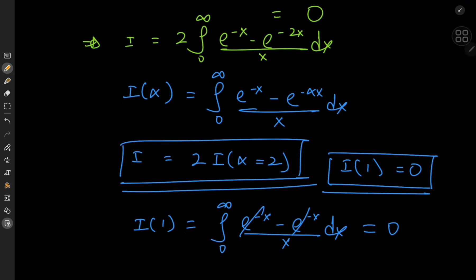Now that we have the perfect plan in place, we'll differentiate the integral function with respect to the parameter alpha. We can switch up the operators here because the integral function converges by Dirichlet's test.